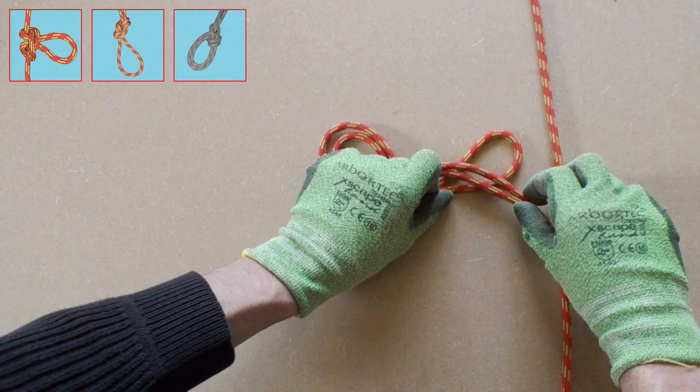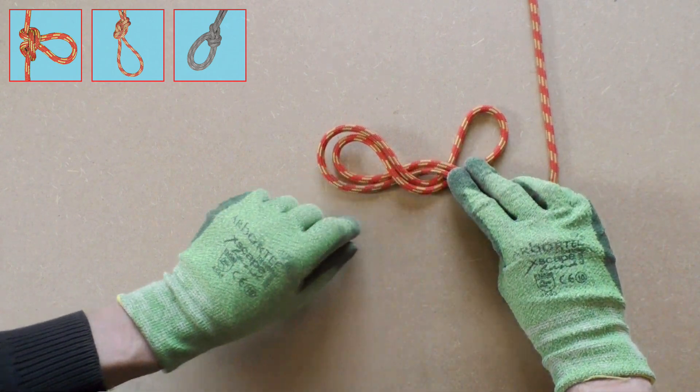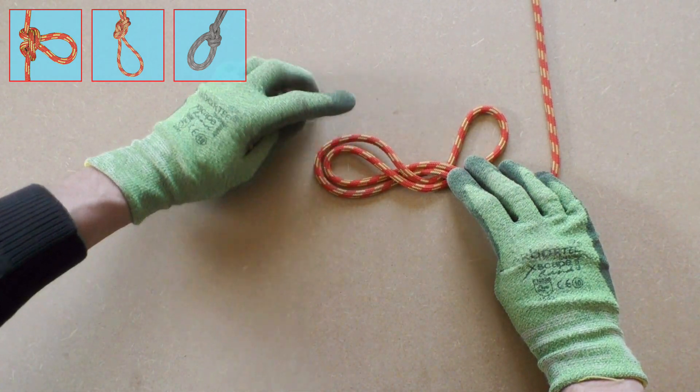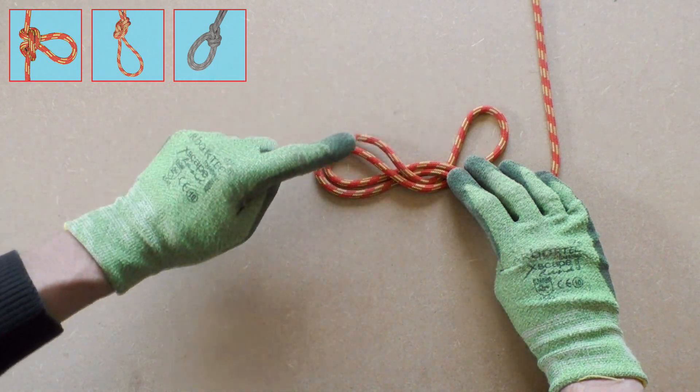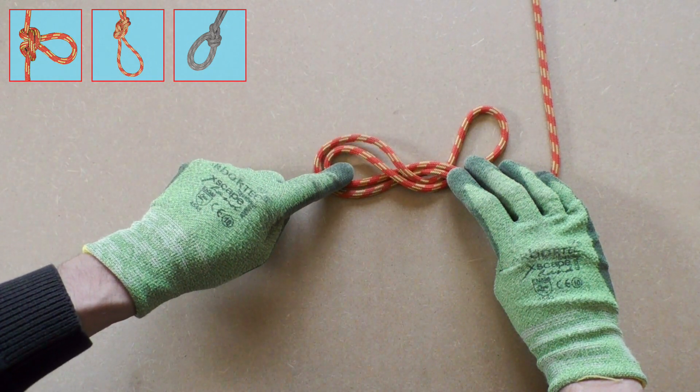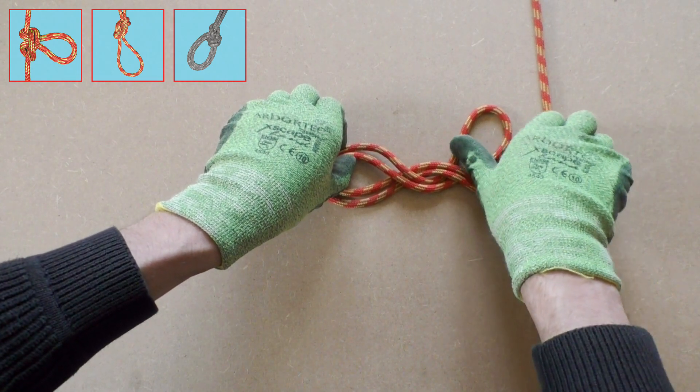We continue by bringing the tip to the other side again but this time we go underneath the standing part. The very recognizable shape of the figure 8 knot starts to form.